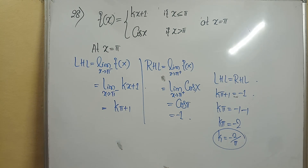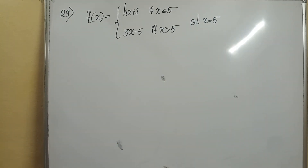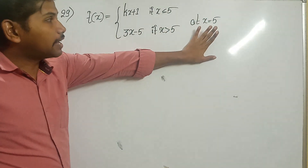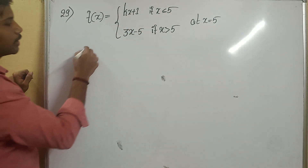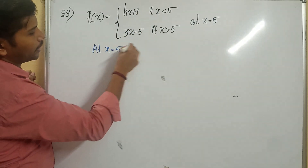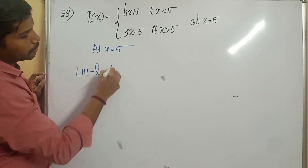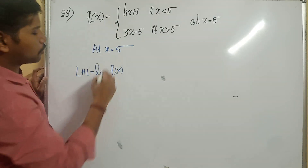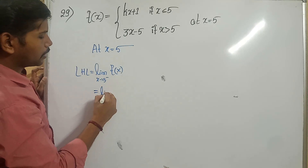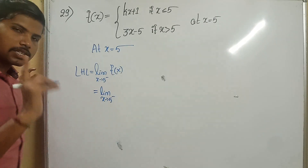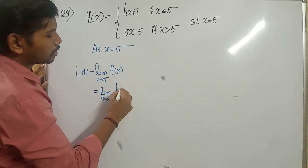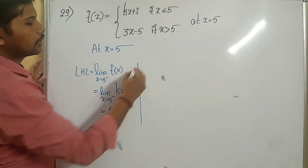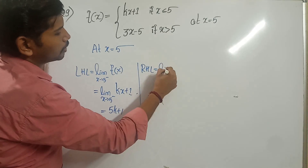Observe the next question — also similar type. The given function is continuous at x equal to 5. I need to find the value of k. At x = 5, what is LHL? Limit of f(x) as x tends to 5 minus. 5 minus means less than 5, so I take kx + 1. Here x is replaced by 5, giving 5k + 1.